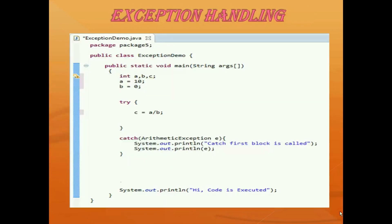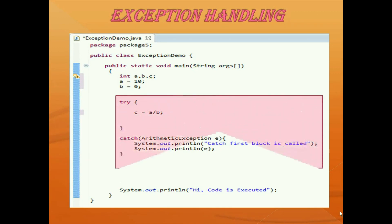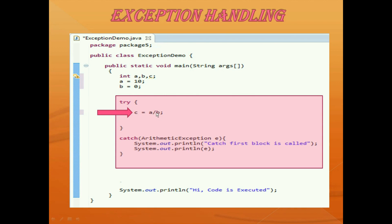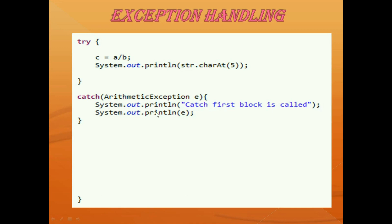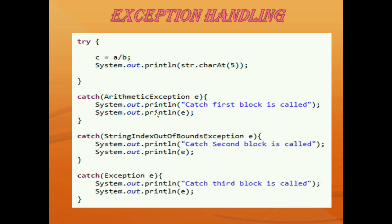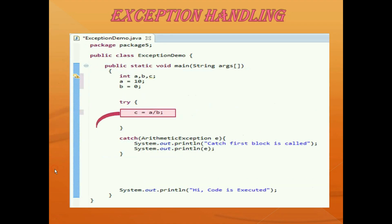In my last video, we have seen that we can use a try-catch block. This is the code which throws an arithmetic exception because any integer which is divided by 0 will give an infinity. Now, in this same try-catch block, we can add multiple catch blocks. Means we can handle multiple exceptional situations. For example, I am catching this arithmetic exception.